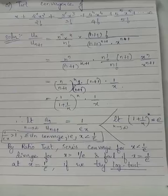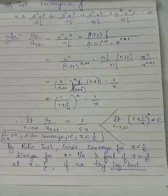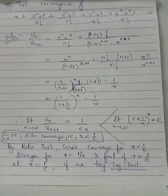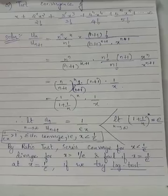We have the general nth term given by n raised to n into x raised to n divided by n factorial, because the factorial term in the denominator, the power in the numerator, and the first number in the numerator are all the same for every term. Therefore, the general nth term is n^n · x^n / n!, where x is only a variable.